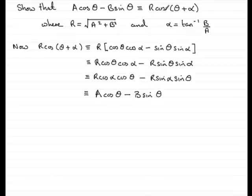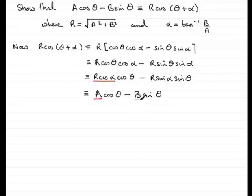We can now see that this is identical to a constant — call it a — times cosθ, minus another constant — call it b — times sinθ. So a·cosθ − b·sinθ is identical to r·cos(θ + α). Note that the minus signs correspond to each other, so b equals r·sinα without taking the minus into account.